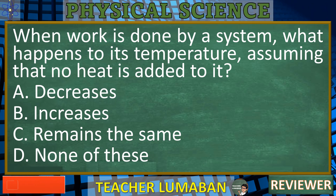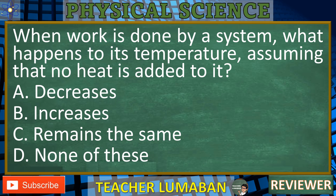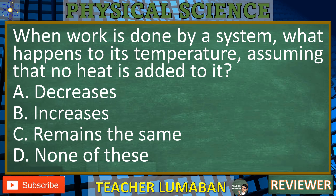When work is done by a system and no heat is added, the system's internal energy decreases. According to the first law of thermodynamics, the change in internal energy delta U equals Q minus W. Since no heat is added, Q equals zero, so delta U equals negative W. Since work is being done by the system, W is positive, and thus delta U is negative, indicating a decrease in internal energy. Since internal energy is directly related to temperature, the temperature also decreases. The correct answer is A. Decreases.